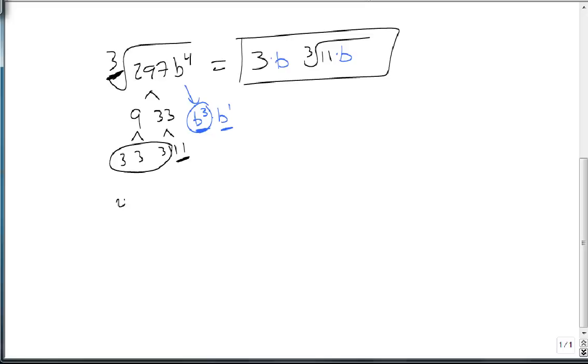As a final example, suppose we have the fourth root of 224 s to the 8th t to the 7th. Well, let's break 224 down.